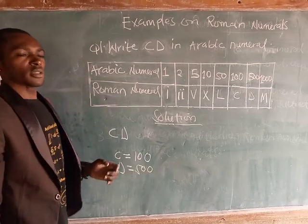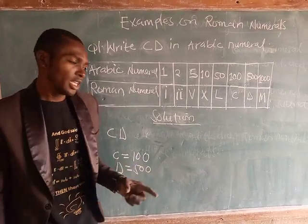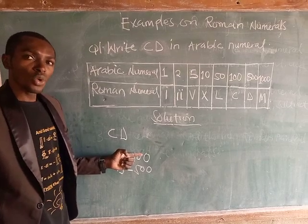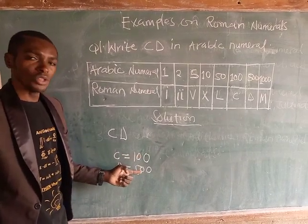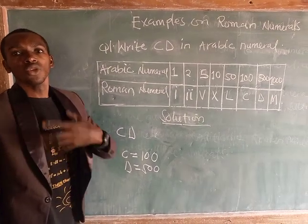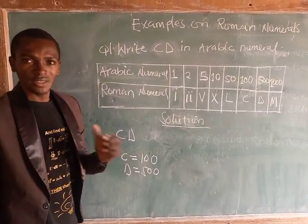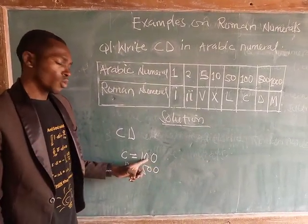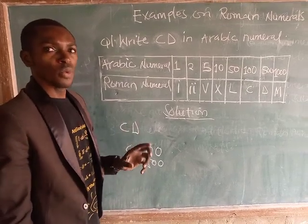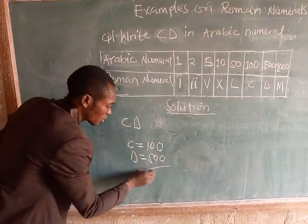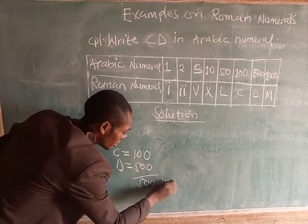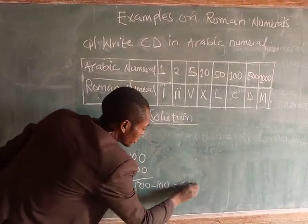Don't forget from our last hint: if there is a smaller Roman numeral before a bigger Roman numeral, what you have to do is subtract. So we go ahead to say 500 minus 100, which is equal to 400.